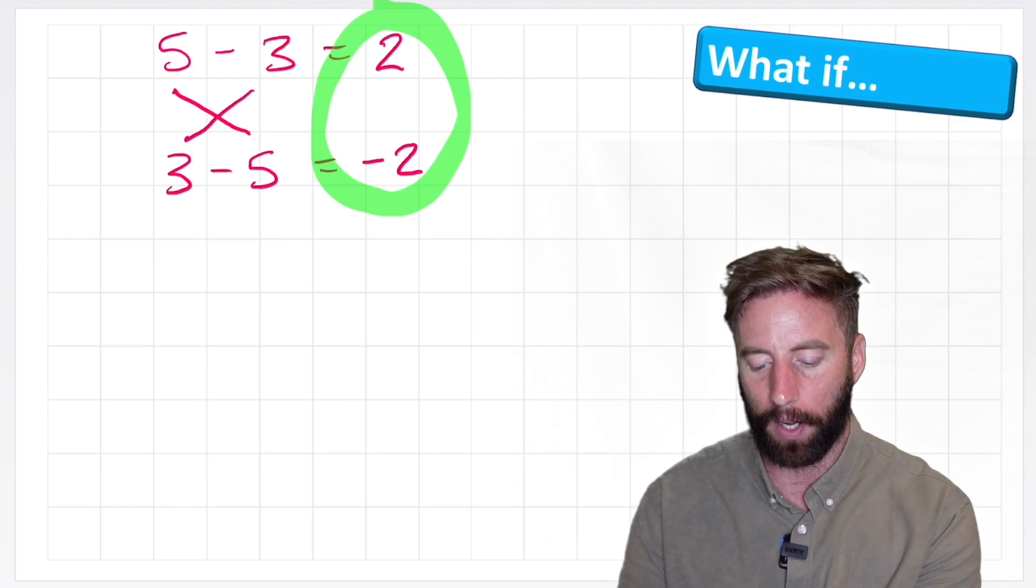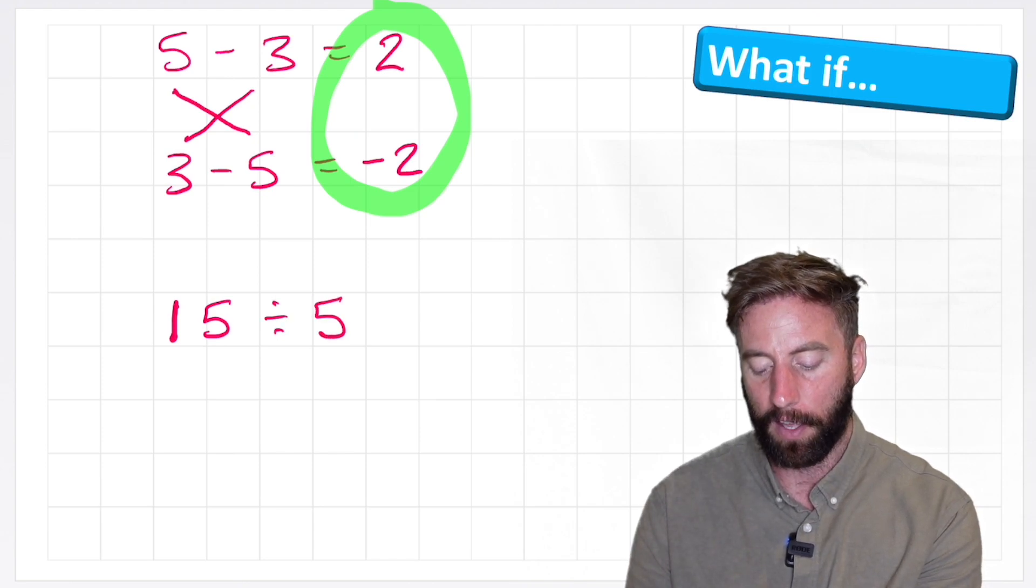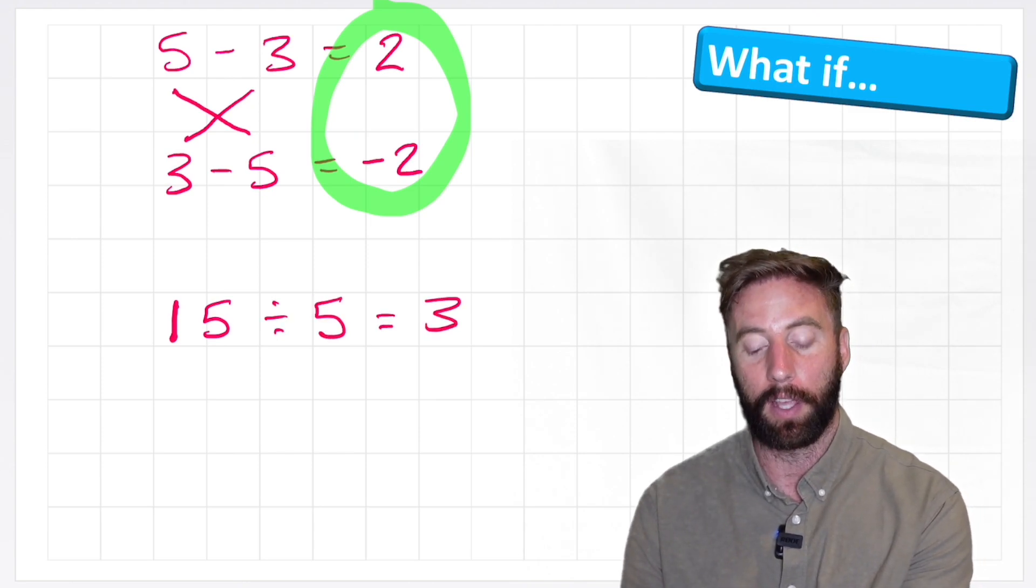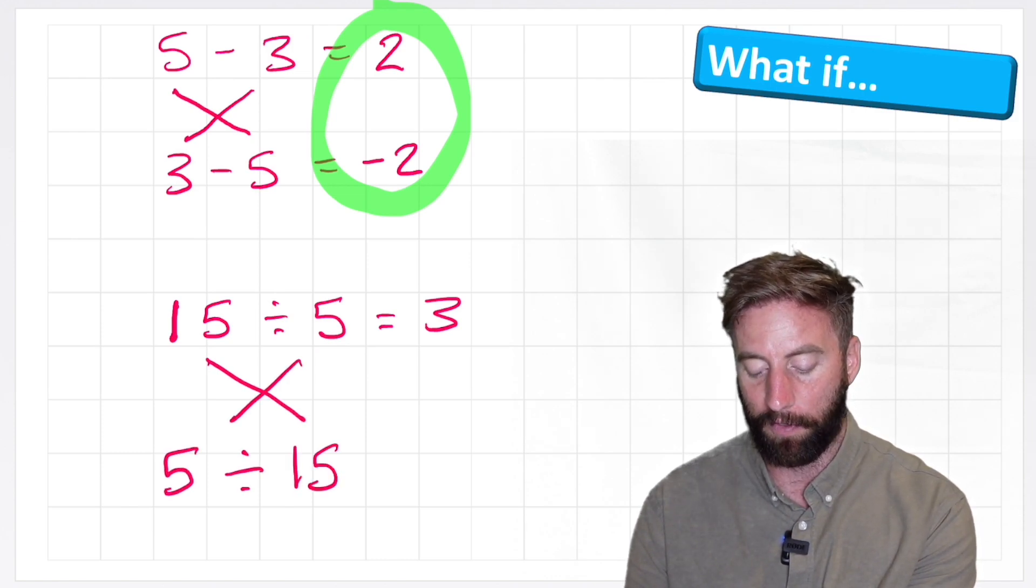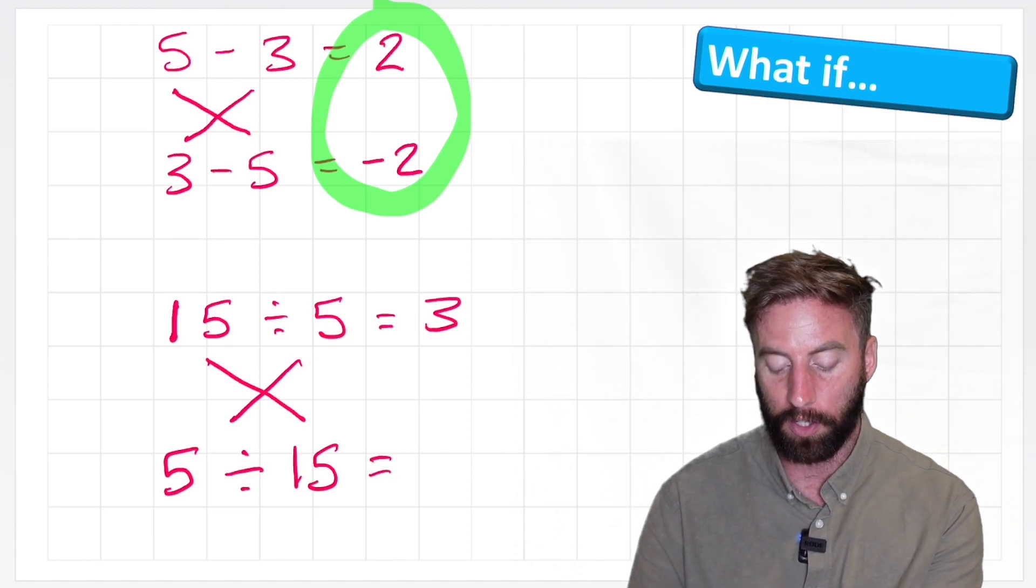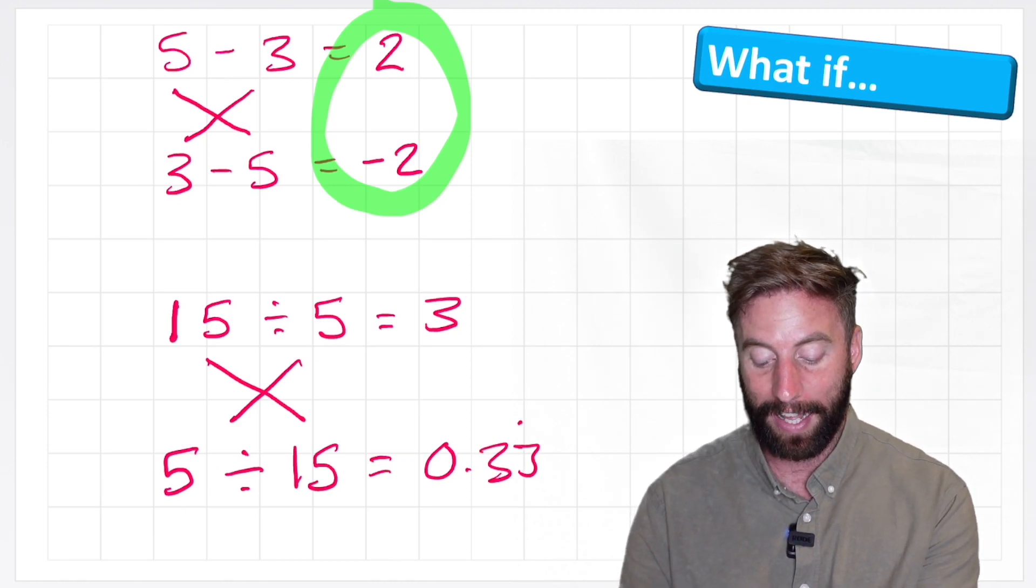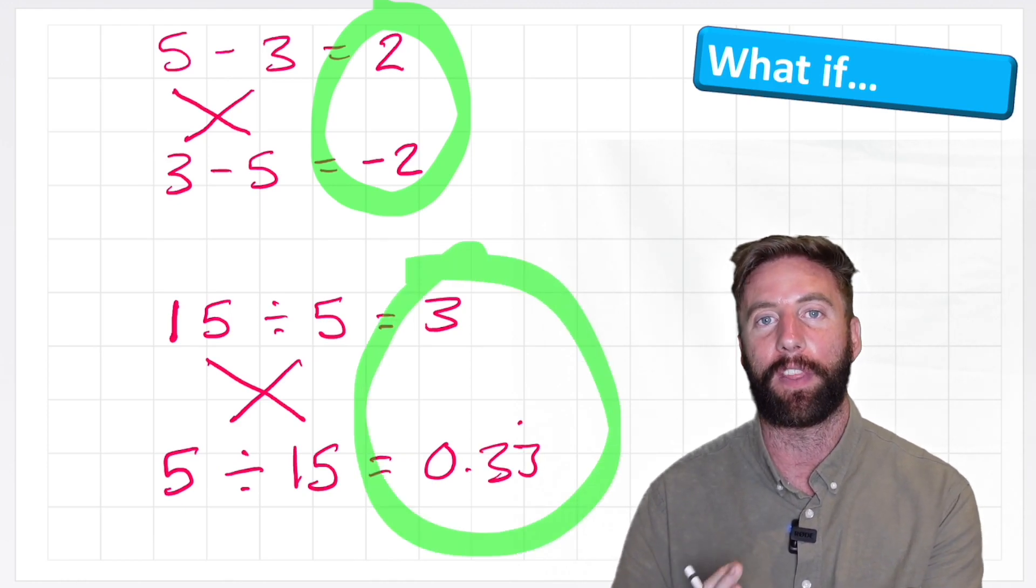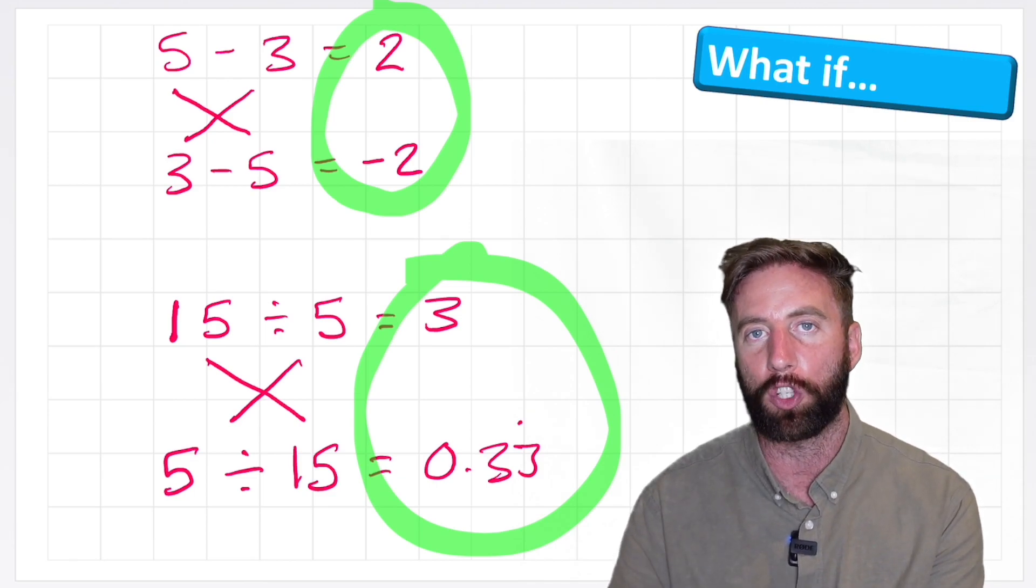Let's look at division. If I have 15 and I divide that by 5, I get 3. Let's move our digits around. Now I have 5 and I'm sharing it with 15. Well, this is actually quite a hard question to answer. But I know that my answer is 0.33 recurring. And again, definitely not the same answer. So again, division is not commutative.